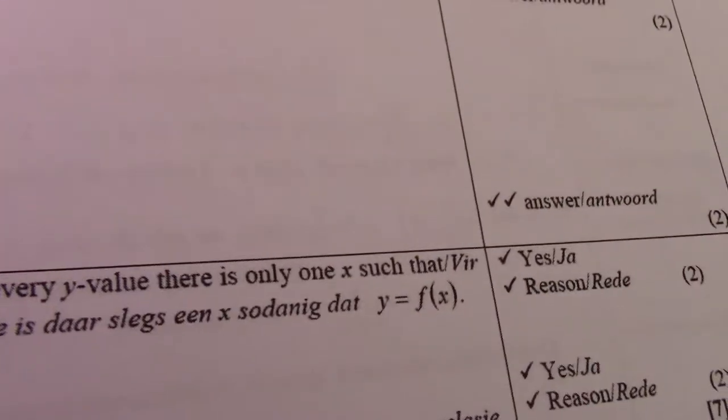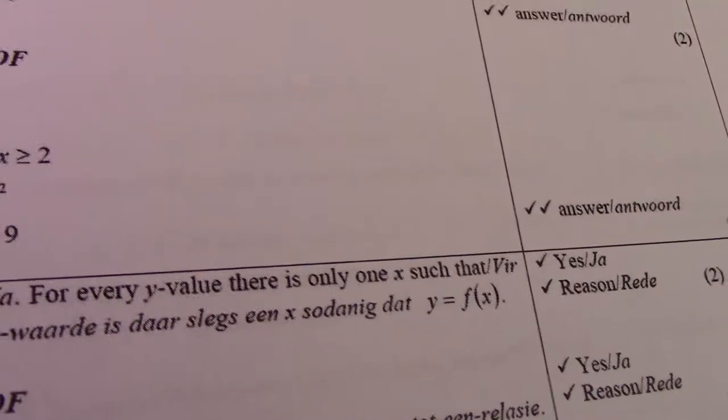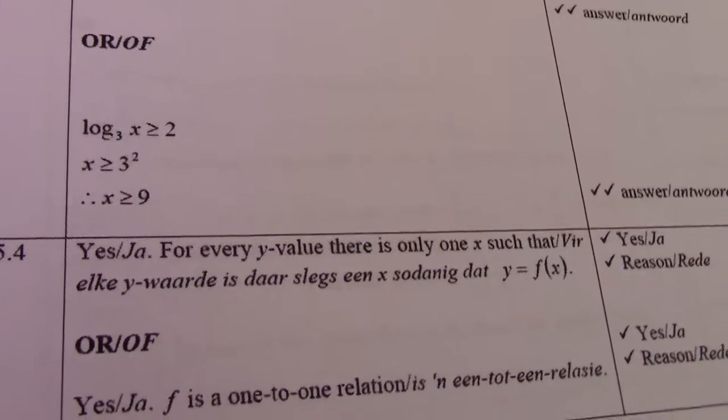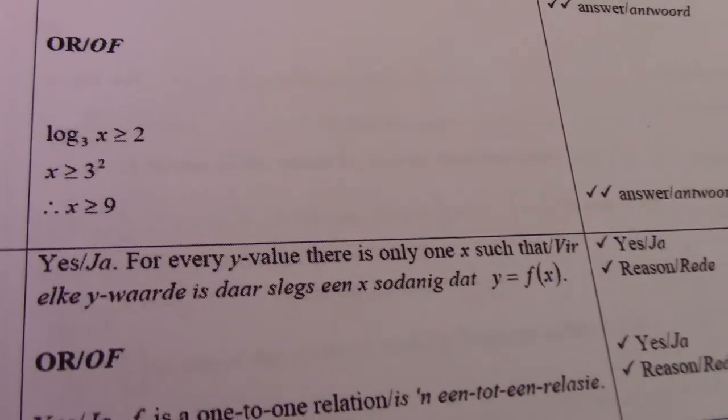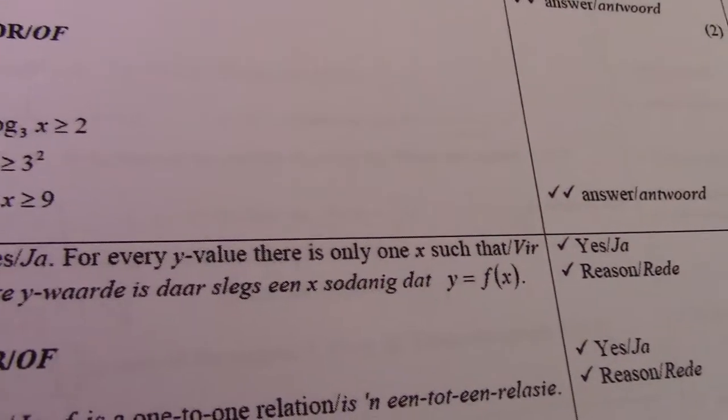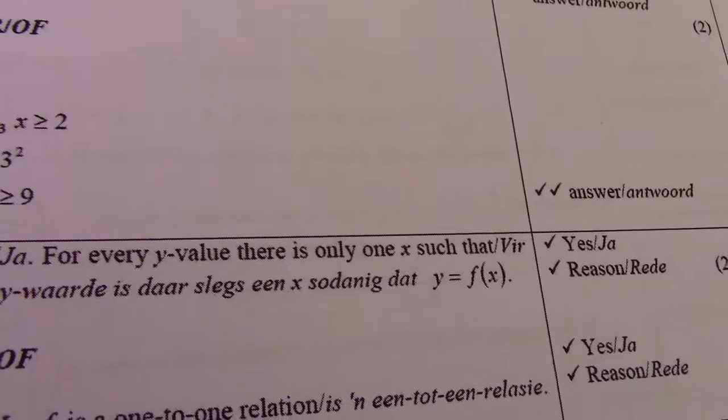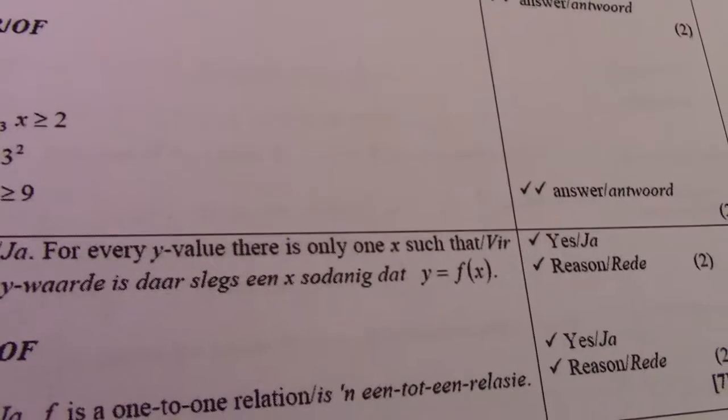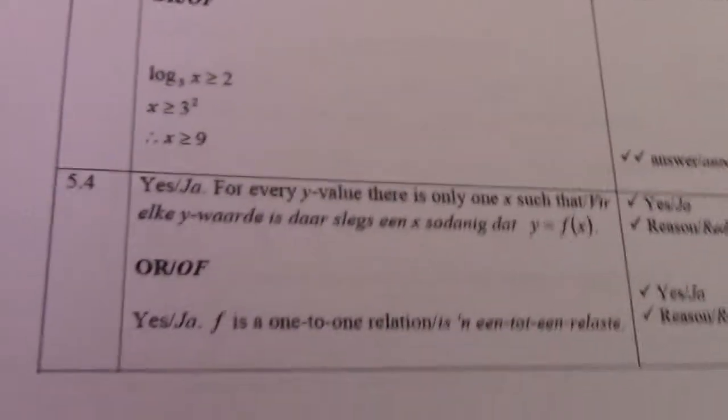So as we said, for every y value, there is only 1 x so that y equals f of x. See, I just forgot how to pronounce the letters in Afrikaans.